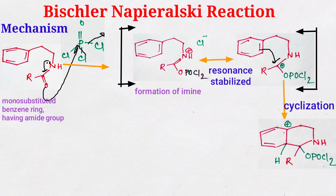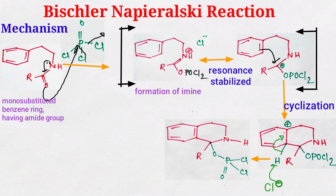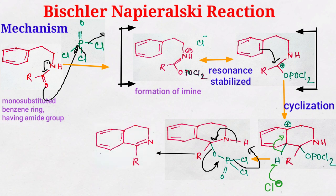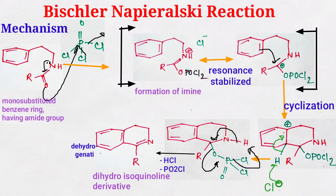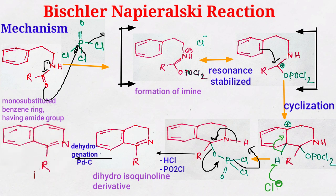The chloride anion then removes a hydrogen, bonds shift, and we get a dihydroisoquinoline derivative. After removal of hydrogen chloride and PO2Cl, we obtain the dihydroisoquinoline derivative. After dehydrogenation or aromatization in the presence of palladium on charcoal (Pd/C), we obtain the isoquinoline derivative. This is the complete process to synthesize isoquinoline.